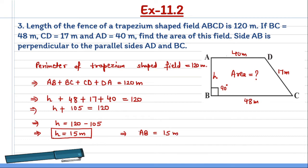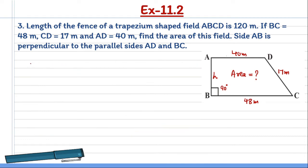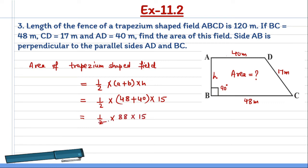Now, we need to find area of this trapezium shaped field. Area of trapezium shaped field equals half into sum of parallel sides, a plus b into h. So, 1 by 2 into parallel sides are 48 plus 40, into h is 15. This is equal to 1 by 2 into 88 into 15. Canceling 2 from 88 gives 44. So, it will be 44 into 15. This is equal to 660 meter square. I hope the solution is clear.